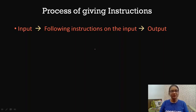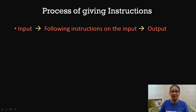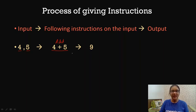Following the same process of giving instructions — input first, then instructions based on the input, and then the output — let us take a simple mathematical example of addition. We will need two numbers in order to add them and get the desired result. We have taken two numbers here, 4 and 5. We have added them, given the instruction to add these two numbers, and we have got the desired result of 9. This is how this process is followed.